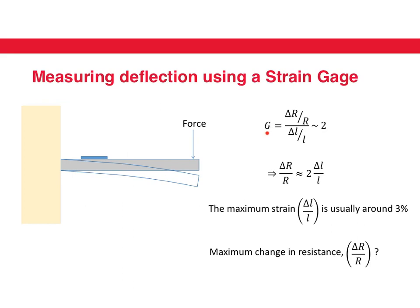Let's assume that the gauge factor of the strain gauge is 2. Remember that the gauge factor is the relative change in resistance divided by the strain. So what is the relative change in resistance? It's 2 times the strain.